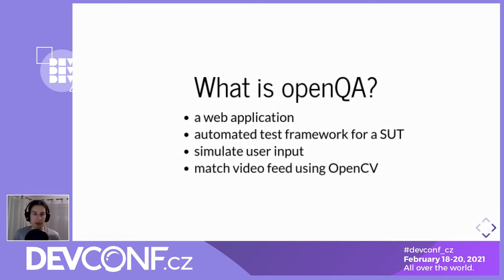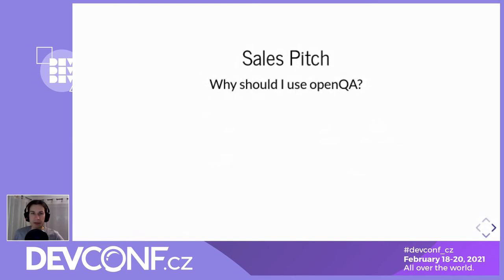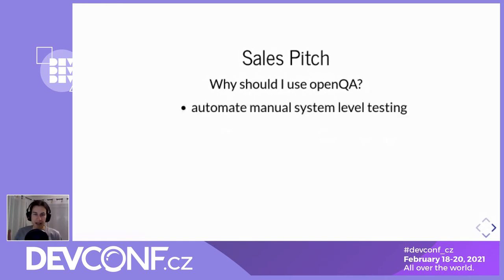OpenQA can simulate user input — stuff like pressing on a keyboard, moving the mouse, clicking the mouse, listening to sound, and watching video — meaning watching the video output from your system under test. It can do image recognition on the resulting video feed and do comparisons with expected output. Before we dive into further details, let me try to be a sales engineer — which I'm not — so why should you use OpenQA? First, you should use it if you want to automate so-called system-level testing. For example, if you've created a Linux distribution and want to test that the installer still does the right thing.